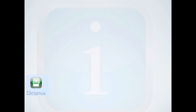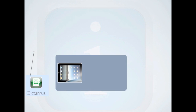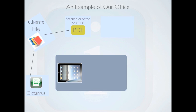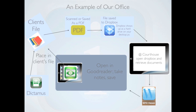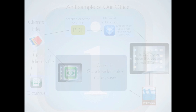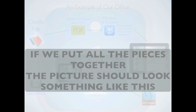You set up a Dropbox folder for your Dictimus files. You dictate, and then your paralegal or whoever can put it in your client's file, scan it as a PDF, and save it to Dropbox. Then you can open it up at the courthouse. If it's a WordPerfect document, you can still open it or save it in GoodReader.